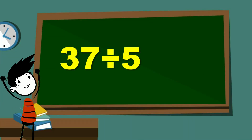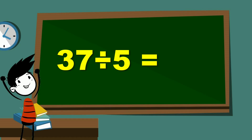Do you know what 37 divided by 5 is? I'll give you 5 seconds to figure it out, starting now. Time's up! The answer is 7.4.